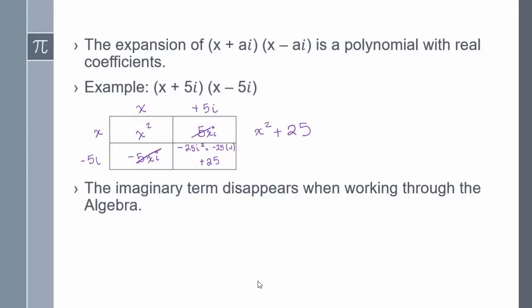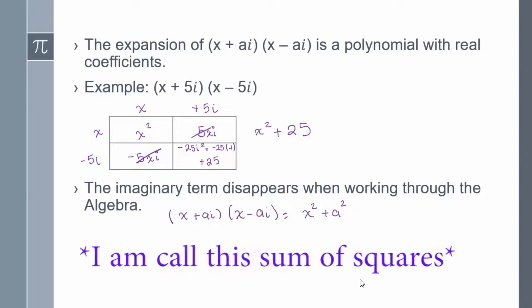Notice in the multiplication, the imaginary term disappears when working through the algebra. So one of the general statements we can make is that x plus ai times x minus ai gives us x squared plus a squared, which is what we see in this example: x plus 5i times x minus 5i is x squared plus 5 squared, which is x squared plus 25.